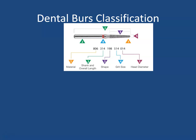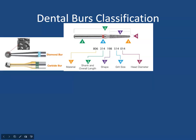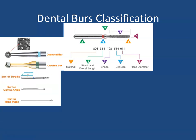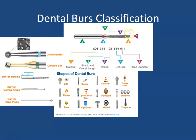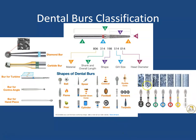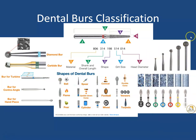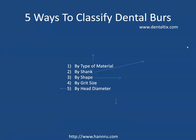The first way is according to the dental material. Another way is based on the type of shank — the portion that connects the burr to the handpiece. A third way is based on the shape of the burr. Then there is the grid size, whether it is thicker or finer, and finally the size of the head diameter, whether it's small or large.